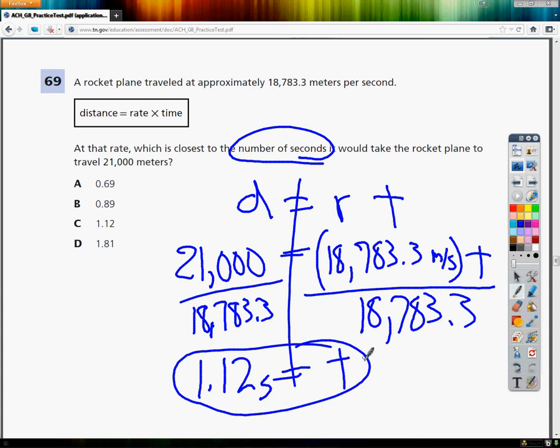So it takes just over a second to get there. So the answer to number 69 is C. Anytime you are given an equation, write it down. Start plugging things in. It will make it easier to get the correct answer. Don't try to just calculate the answers to death in the calculator because you could get in a lot of trouble that way.